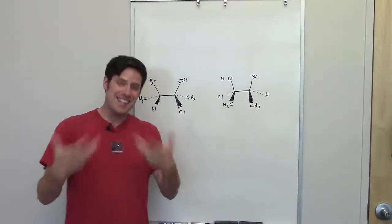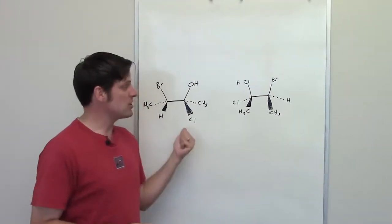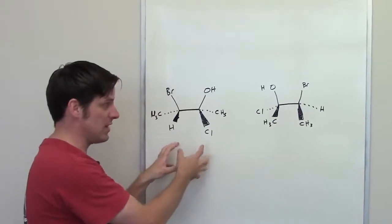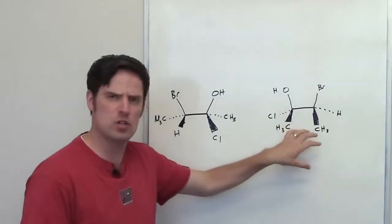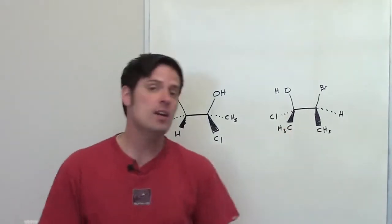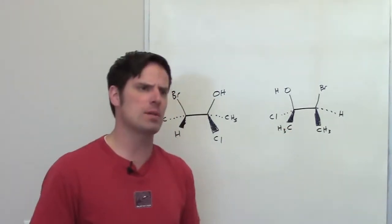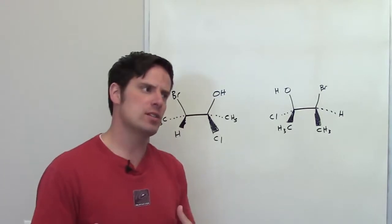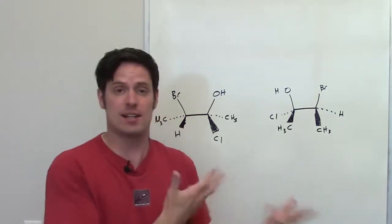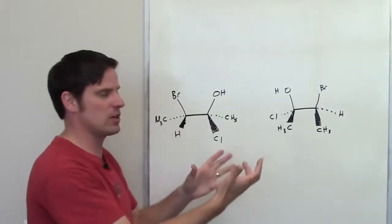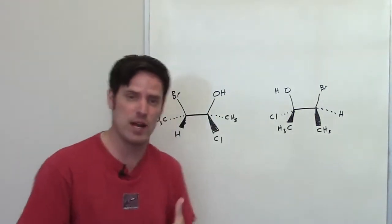In this question, we've been asked to determine the relationship between the molecules shown here to the left and the molecules shown here to the right. Are they enantiomers, diastereomers, or just the exact same molecule with the bonds twisted around in slightly different ways?